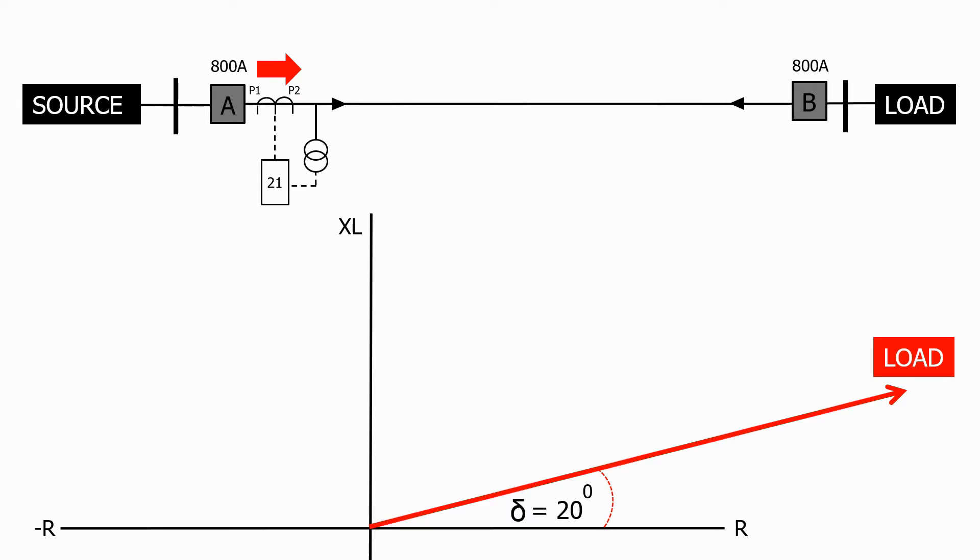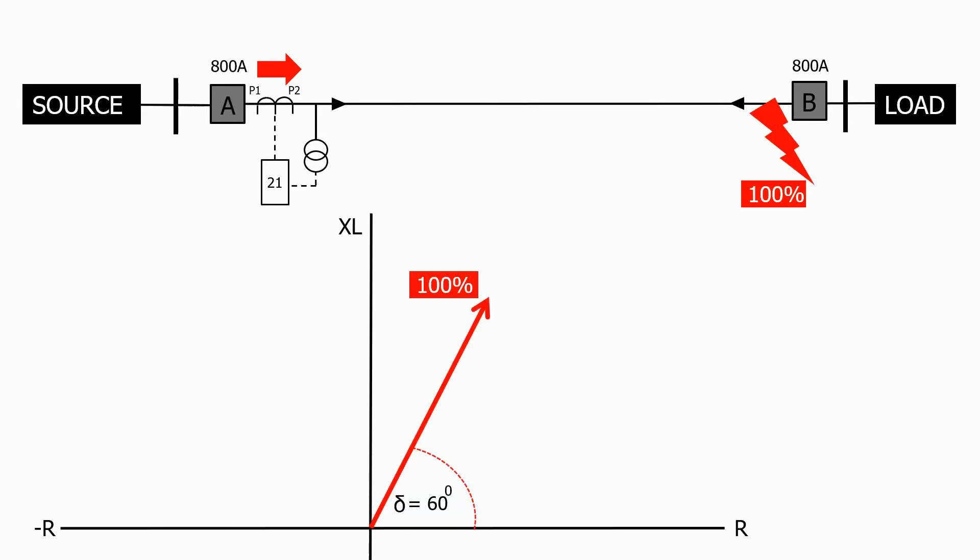If we get a fault at 100% of the line length, this is the impedance value that we will measure. This consists of two components, 100% of the line resistance and 100% of the line reactance. As the fault has occurred on the line, the characteristic angle of the fault impedance is normally about 60 degrees.